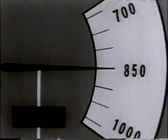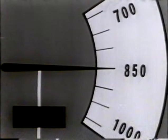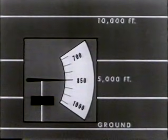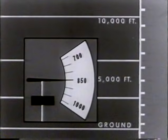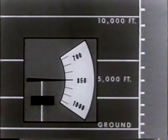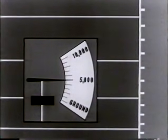We have thus obtained a series of pressure readings. Pressure, it seems, is related to height. It looks as though we can change our instrument to a height indicator by merely changing our pressure scale to a height scale. This we could do if the pressure-height relationship of the atmosphere were always constant, that is, if its density remained uniform.